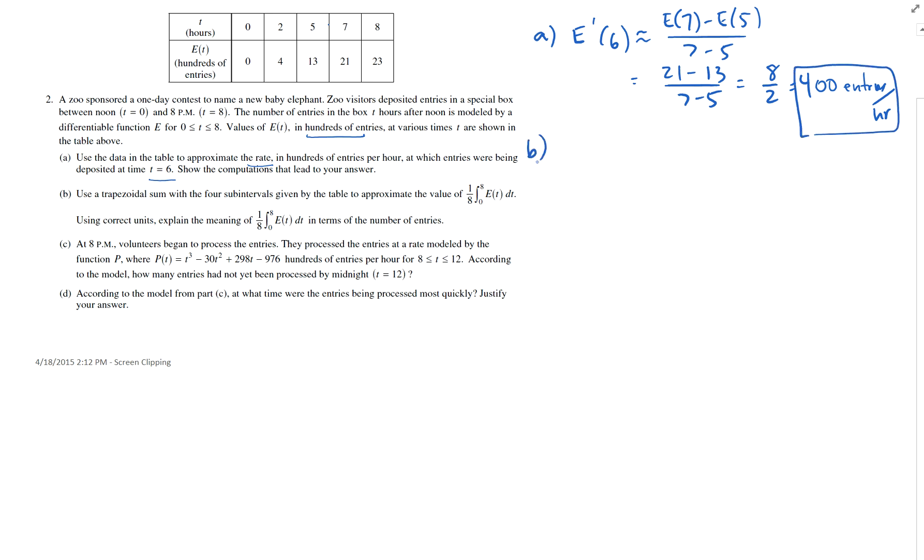Part B. Using a trapezoidal sum with 4 subintervals by the table to approximate the value of this. Okay, well let's take a look at this. What is this? Let's see, one-eighth zero to eight e of t dt. Well, again, you don't have to draw, make this drawing, but I'm going to so you can see what's going on here.